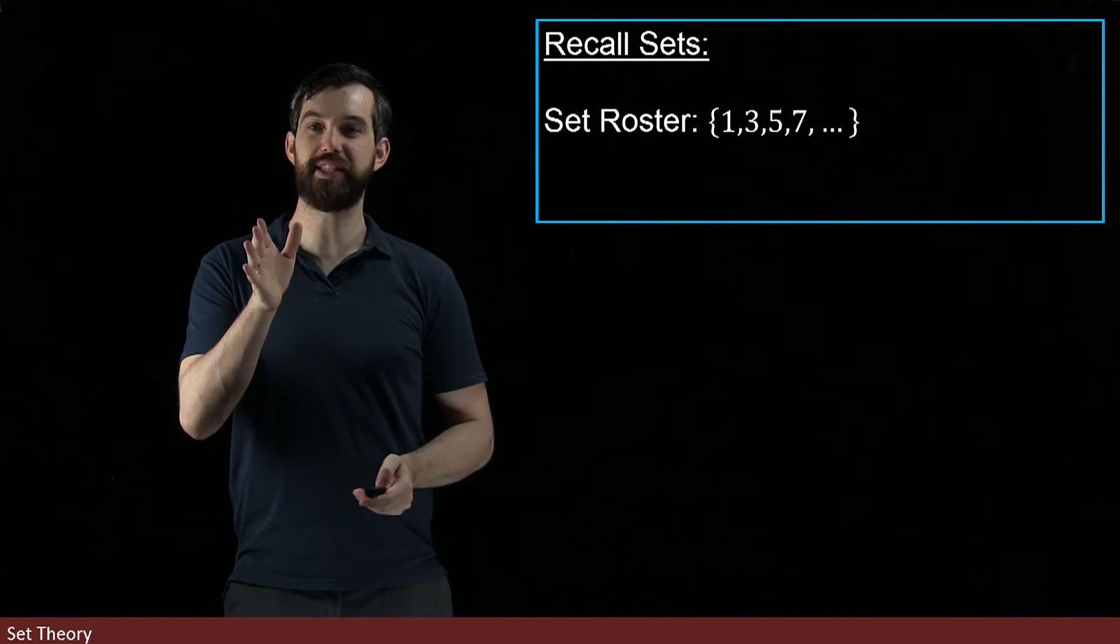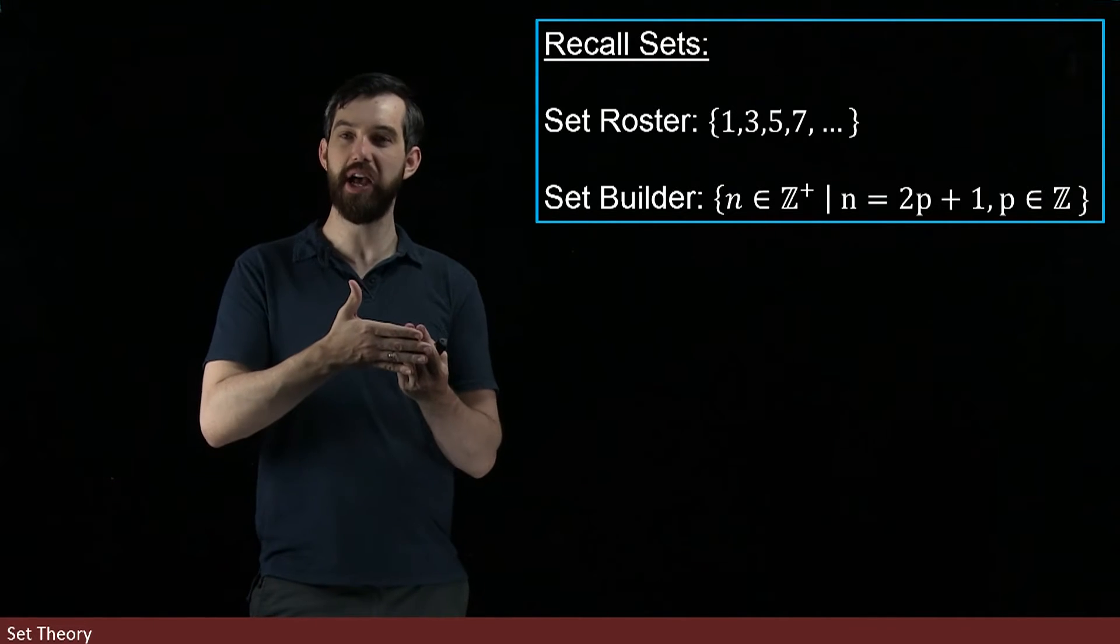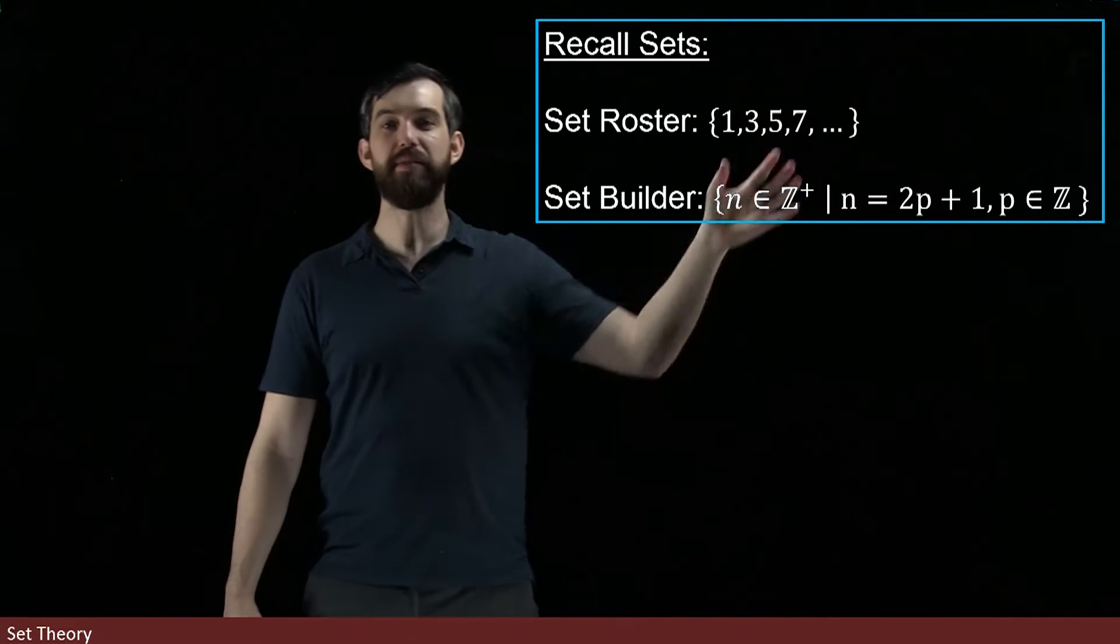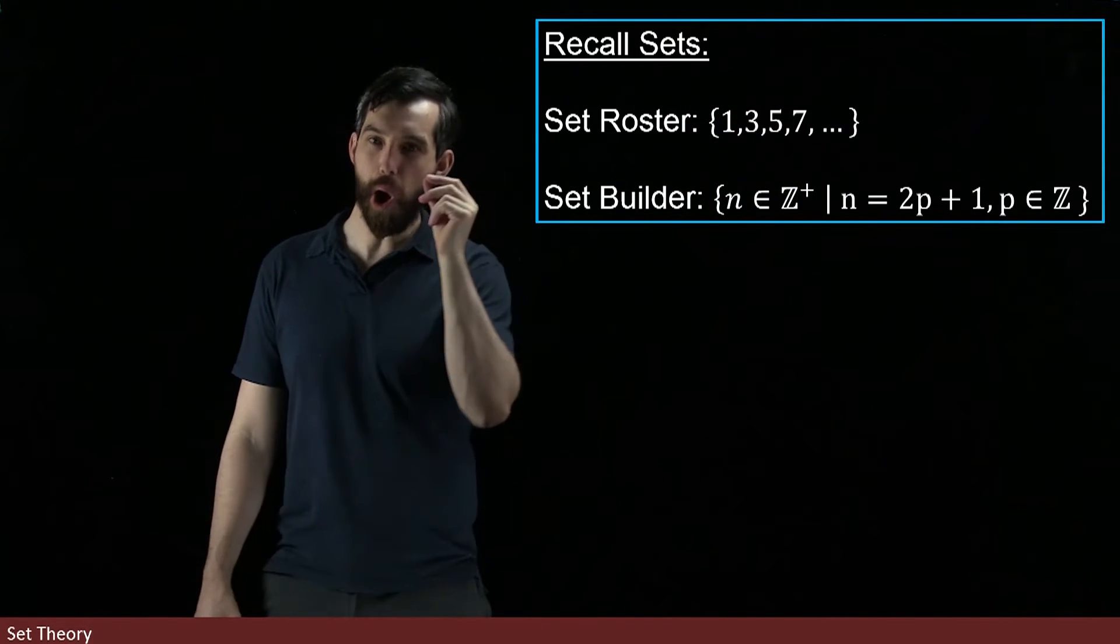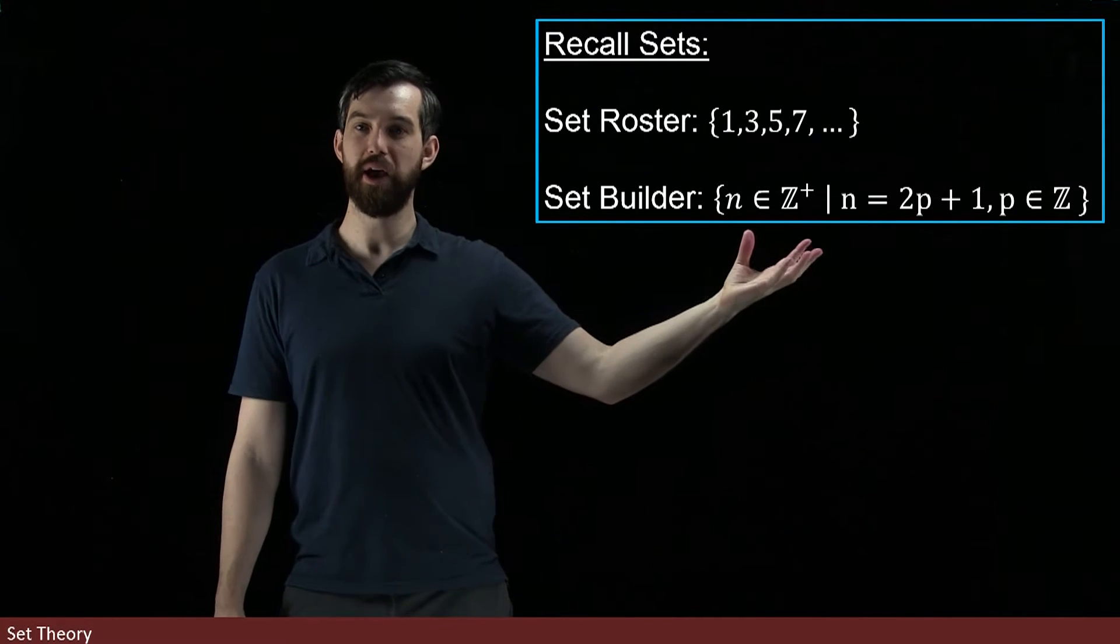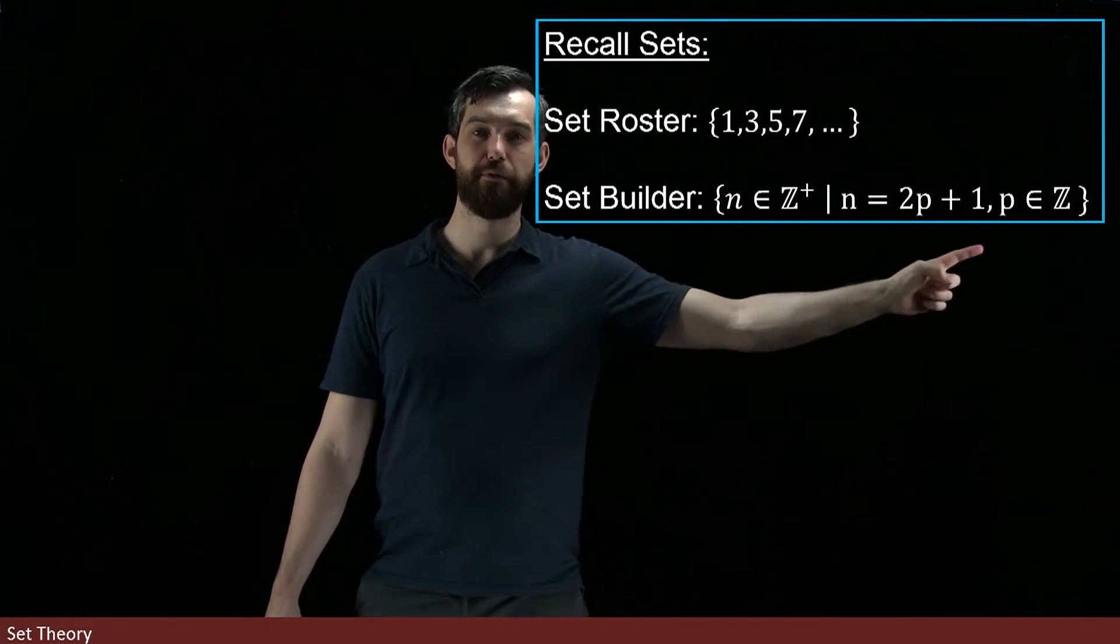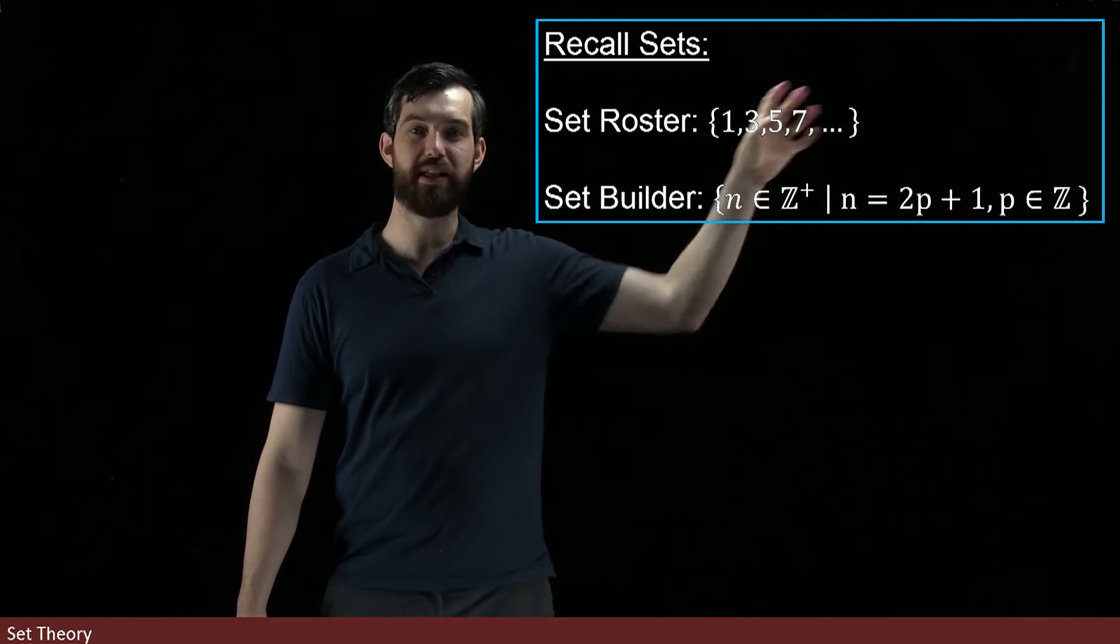We also have set builder notation, which is a way that we could easily describe often larger sets that are defined by some common pattern where there's some property that's read after the such that, the vertical bar. Indeed, in this particular case, these two sets I've described are the same. One, three, five, seven, and so on describes the positive odd integers. Under set builder, I read this as the set of all positive integers n ∈ ℤ⁺ such that n = 2p + 1 for p an integer. That's my way of describing odd integers. The positive integers that are odd are exactly the same as what we have over here.